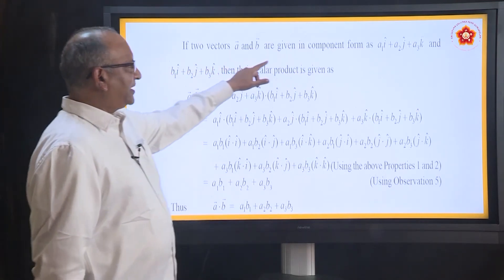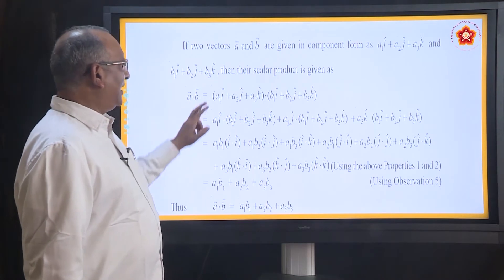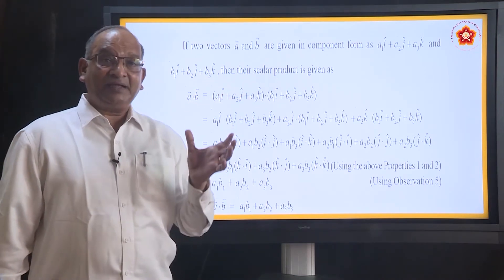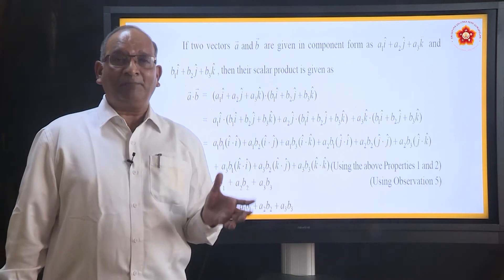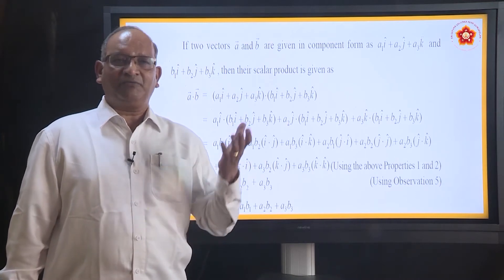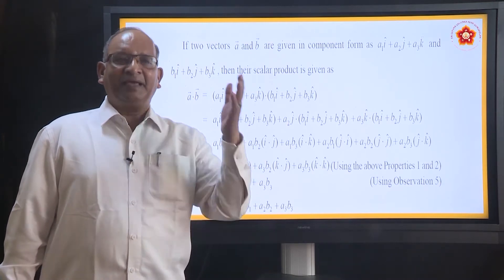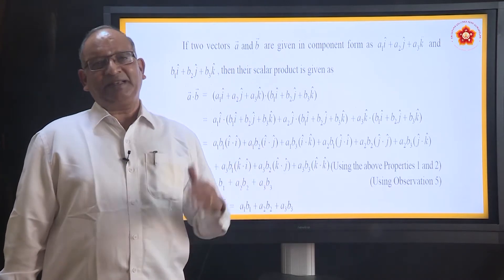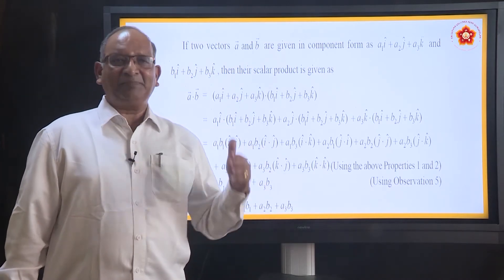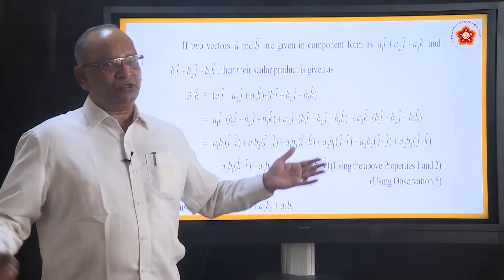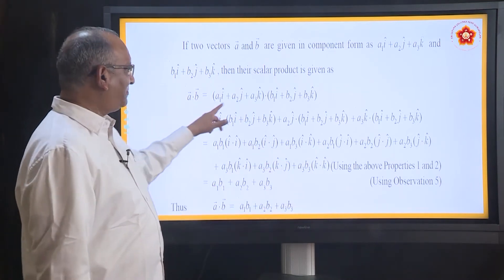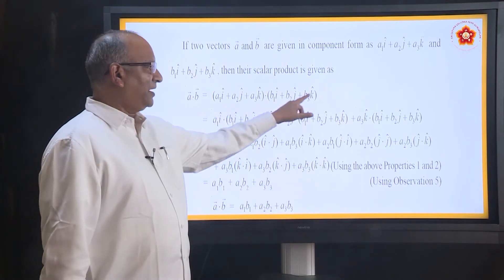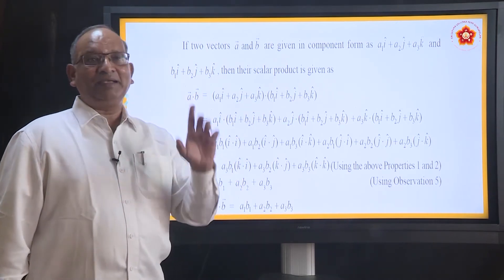Two vectors A and B given in component form and their scalar product. If vectors are in component form — component form means vector A is written as A1I plus A2J plus A3K, and vector B is written as B1I plus B2J plus B3K. So multiply and take the dot product. Three terms multiplied by three terms, you are going to get nine terms.